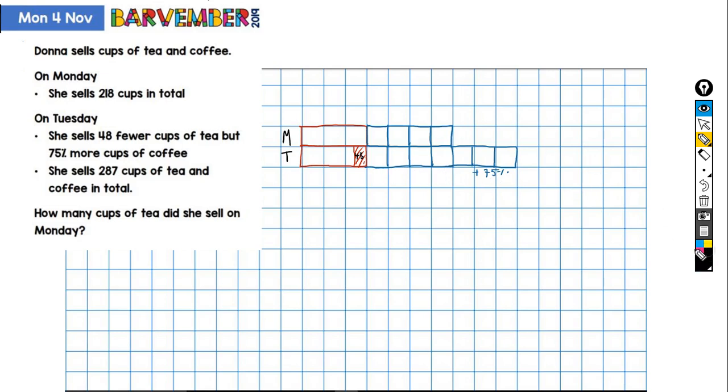Right, let's put some numbers in then. We've got, we know that Monday was 218 in total. Tuesday, I'm told that it was 287 cups of tea and coffee in total. So this, ignore that, plus all of this part is 287. But in my diagram, I've included this 48.